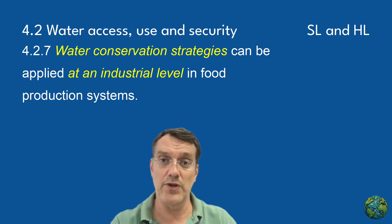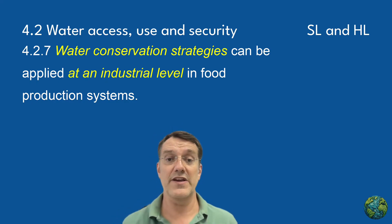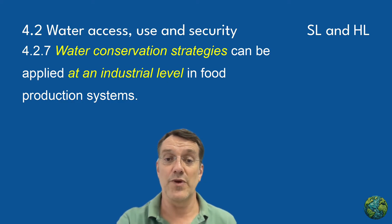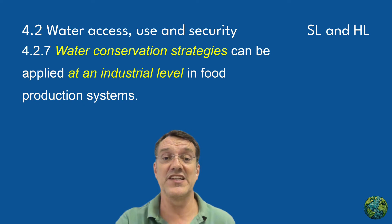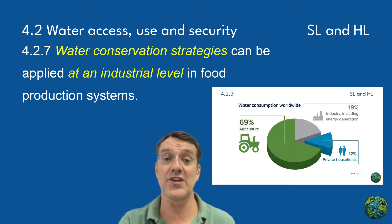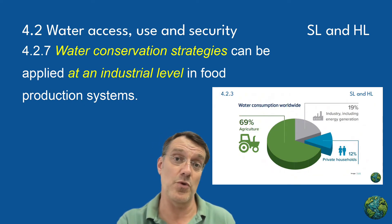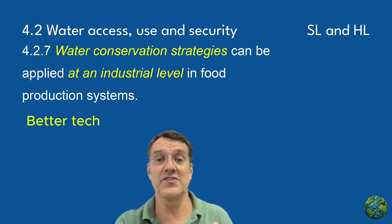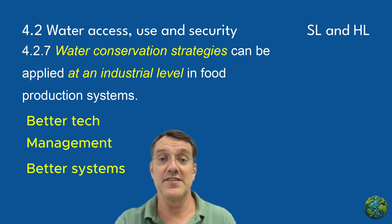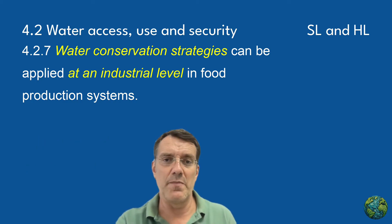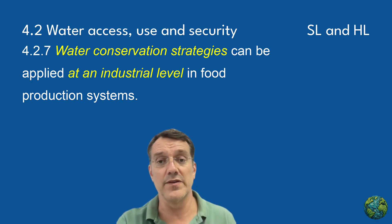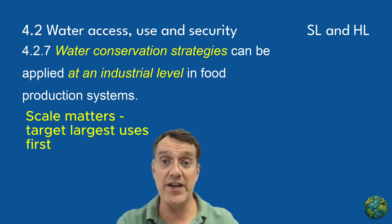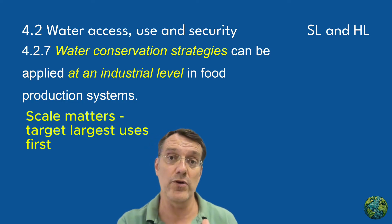Let's transition from household levels to an industrial scale. Water conservation strategies can be applied at an industrial level in food production systems. This addresses the largest water-consuming sector, because agriculture uses about 70 percent of all global freshwater withdrawals. Industrial conservation approaches include technological improvements, management practices, and systematic changes in food production. While domestic conservation is still important, the scale of agricultural use means that improvements in this sector offer the greatest potential impact on overall water sustainability.